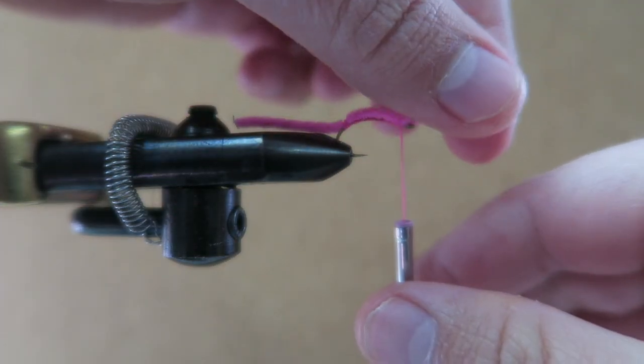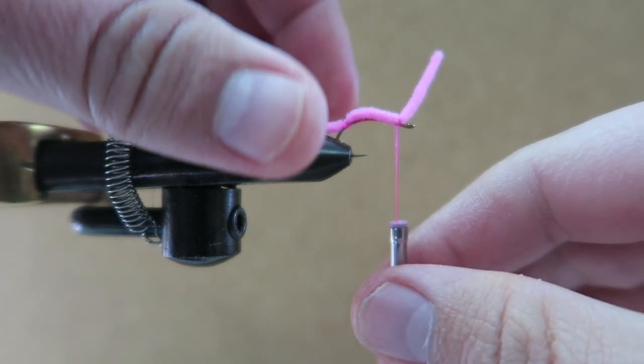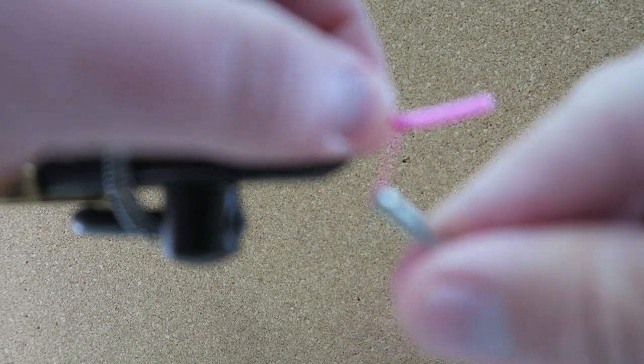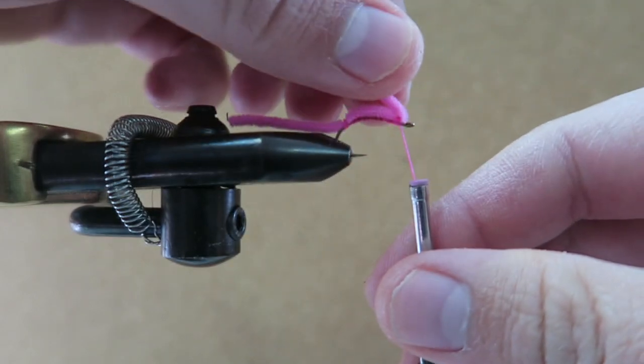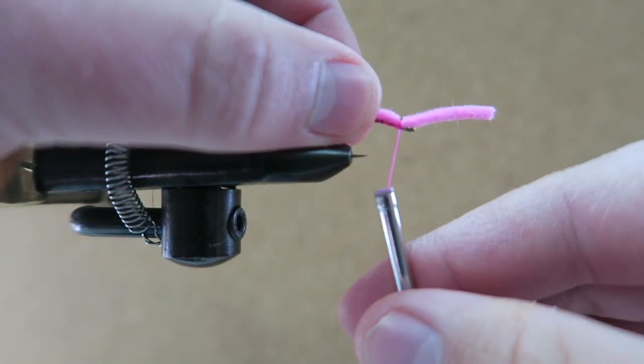I just give it one loose wrap. You want to pull the front of it up and make sure the hook eye is going to be exposed. You don't want to crowd that eye too much because you still want to be able to tie it in. So you just want to give it enough space.